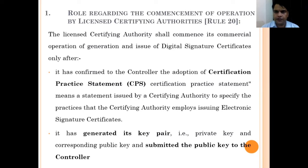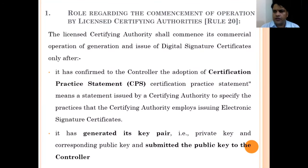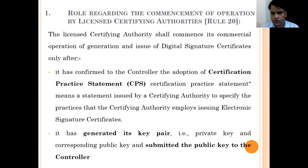We begin with Rule 20 of IT Certifying Rules 2000, which talks about the role regarding the commencement of operation by licensed certifying authorities. The licensed certifying authorities shall commence their main function — that is, to generate digital signature certificates and electronic signature certificates. This rule lays down when they can start generating these certificates, i.e., when they can start their business. The first condition is that they will have to confirm their CPS to the controller.